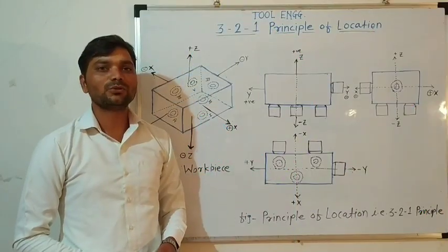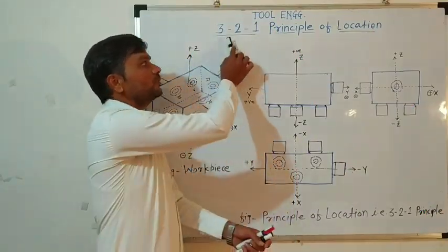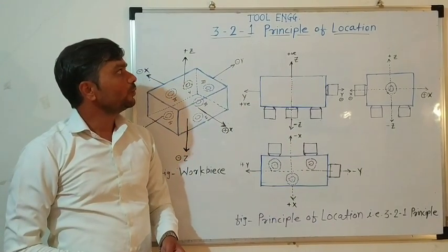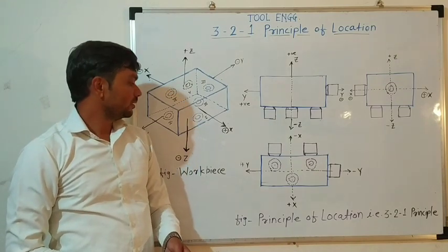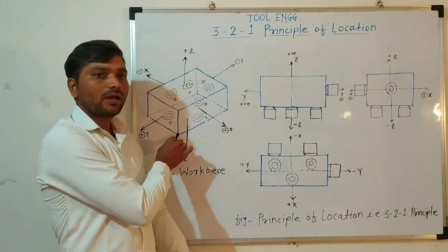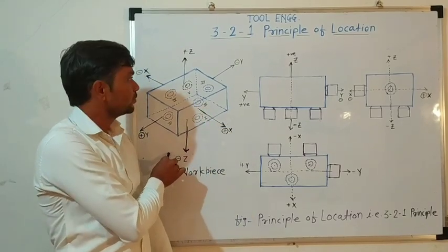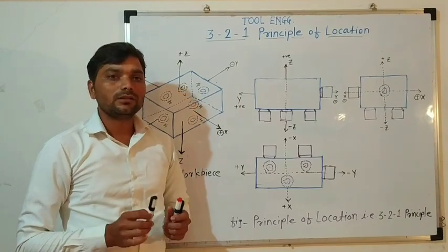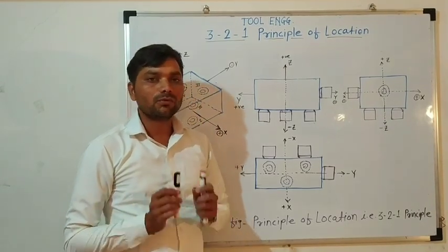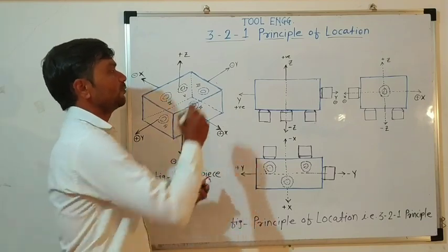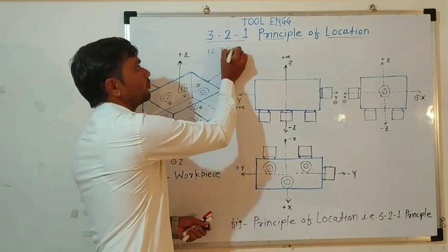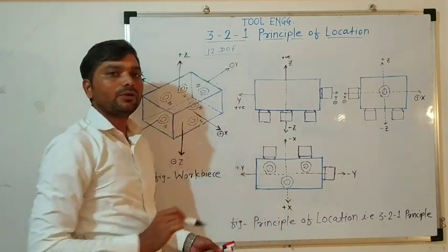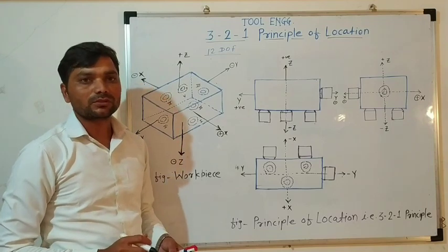Hello friends. In this video I am going to explain the 3-2-1 principle of location. In order to explain the 3-2-1 principle, we have to consider one example. Here we have one object that is a workpiece. When the workpiece is kept in a space, that workpiece or object has 12 degrees of freedom.